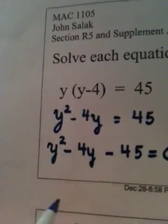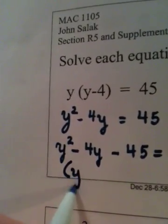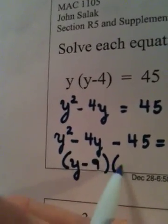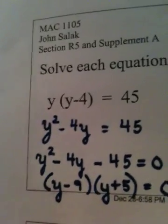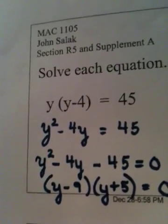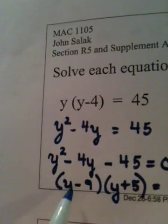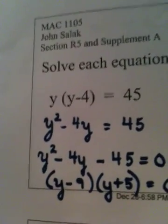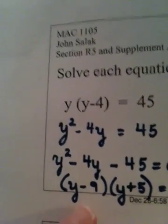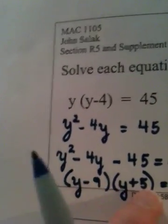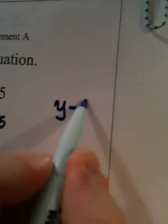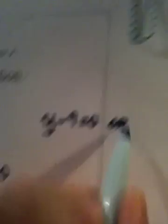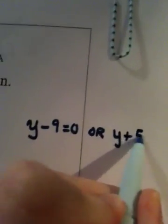So I'm going to write this as y squared minus 4y minus 45 is equal to 0. This is called standard form because it's in descending power order equal to 0. Now, this expression factors. We can factor this as y minus 9 and y plus 5. Remember your old technique from Math 1033 or wherever you're coming to me from. When you have a trinomial in general, you factor it as the product of two binomials or you kind of revert it back to the FOIL method.